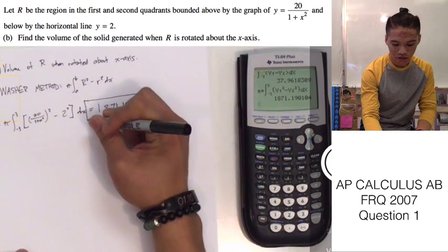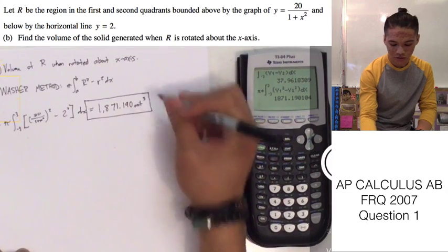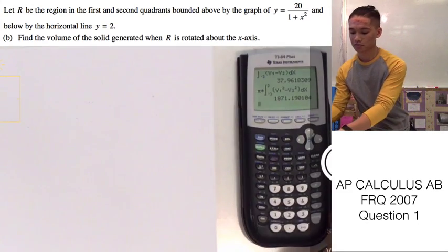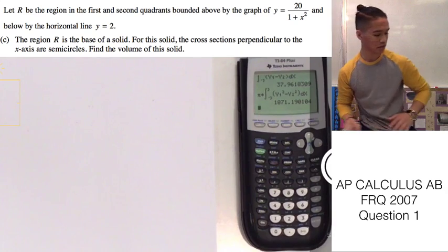And here we can see that we have the value of 1,871.190 units cubed. And we're using the measurement cubed because this is the volume of the solid. So, that's how you do part B.